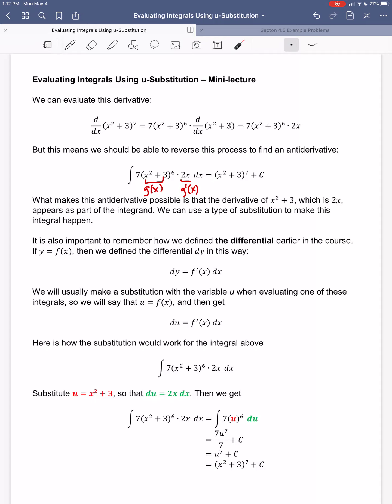It's also important to remember how we define the differential earlier in the course. If we had a function y that was equal to f of x, then we define the differential dy to just be f prime of x times dx. We're going to usually use a substitution from the variable u. So we're going to say u is equal to some function, maybe f of x, and then du would just be f prime of x times dx.